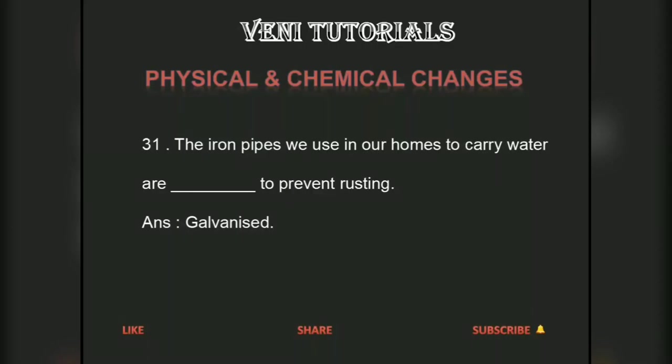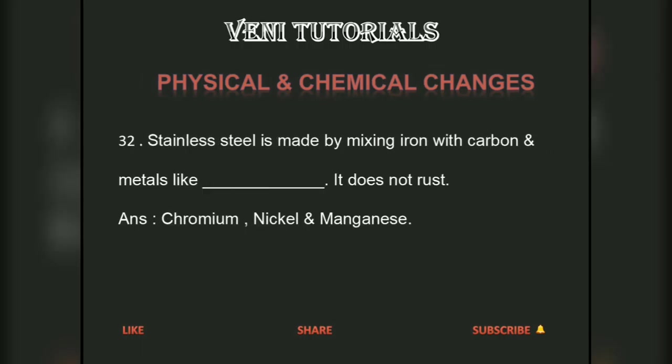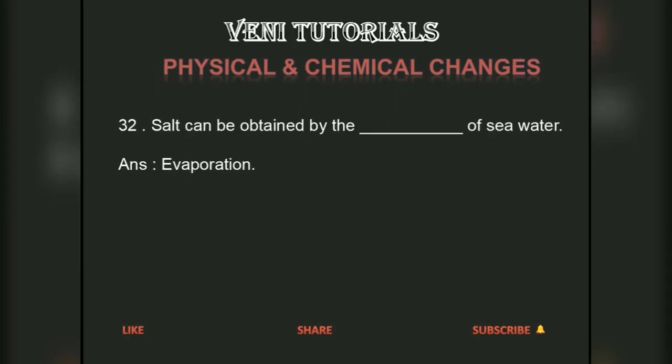The iron pipes we use in our homes to carry water are galvanized to prevent rusting. Stainless steel is made by mixing iron with carbon and metals like chromium and nickel.